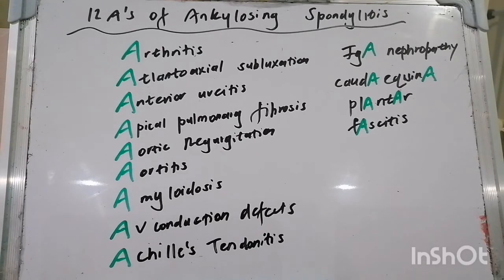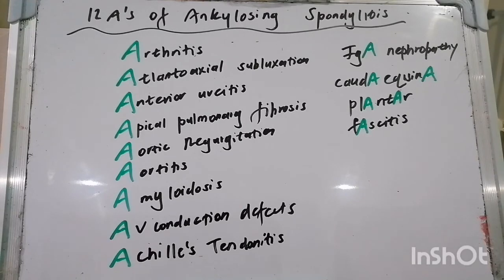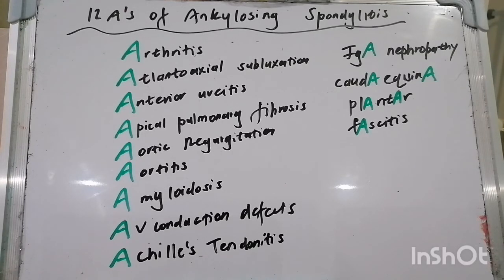How would we investigate someone in whom we suspect ankylosing spondylitis? We want to get an anteroposterior view of the sacroiliac joints and lateral radiographs of the lumbar spine. The earliest changes we note are erosions and sclerosis of the sacroiliac joints. Later in the disease process, we get our beloved syndesmophytes, which may be found in the lumbosacral spine, and in severe disease progressing up the spine, leading to a so-called bamboo spine. Remember also that sacroiliitis is often seen in Reiter syndrome (reactive arthritis), psoriatic arthritis, juvenile chronic arthritis, and enteropathic arthritis.